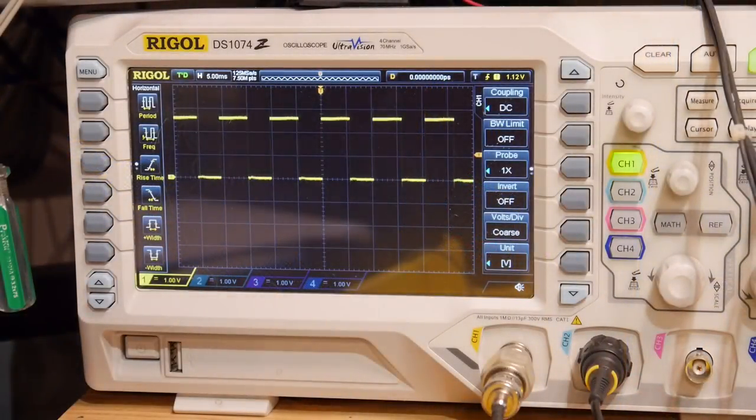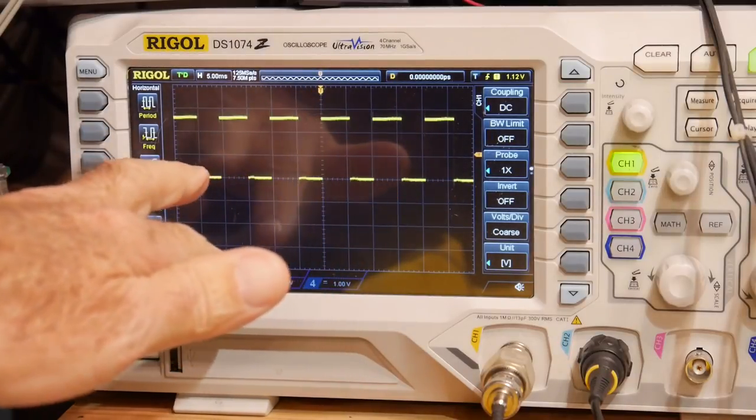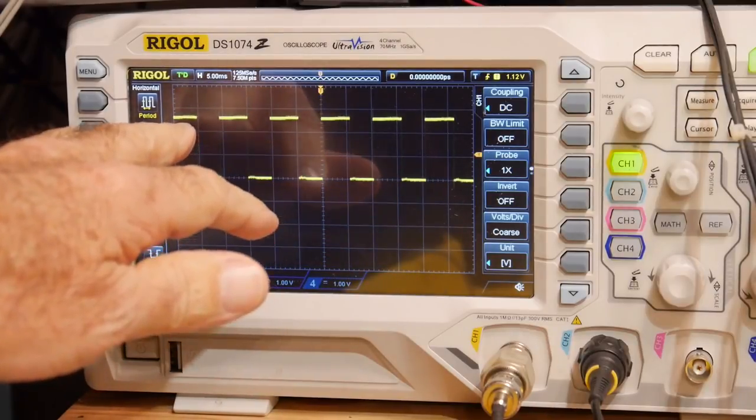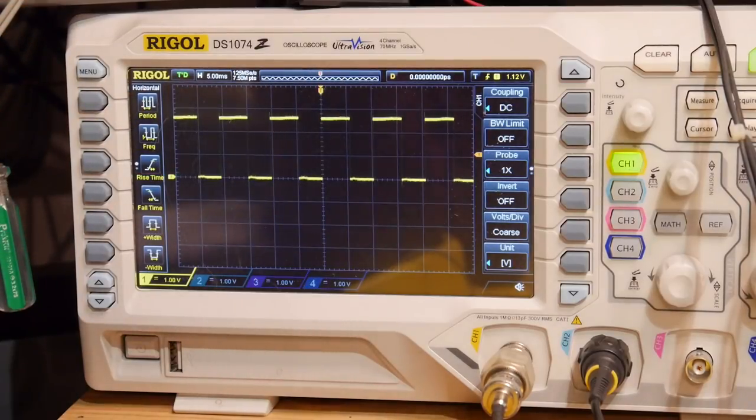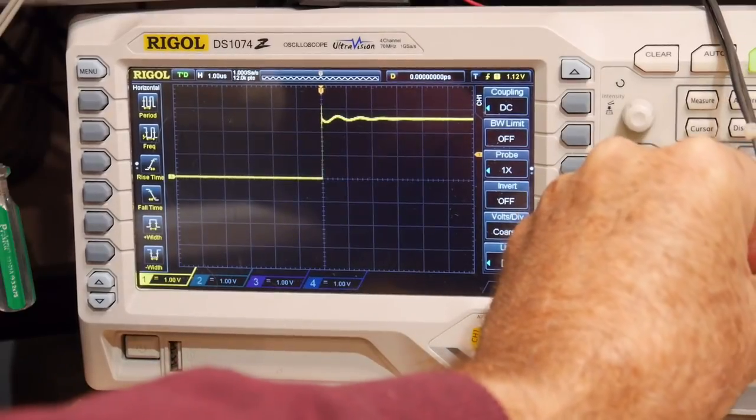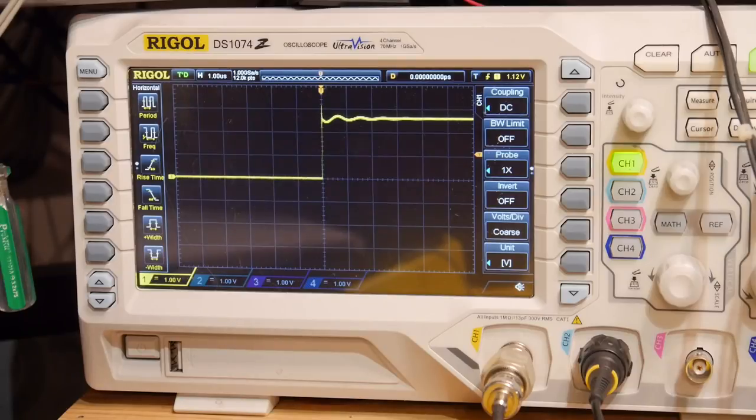Alright, so we have our waveform here. We're at one per division. So, we're getting one, two and a half volts across to the other side. Which is 50 ohms impedance on one side, 50 ohms impedance on the other side. You get half the voltage. So, that makes sense. So, let's zoom and take a look at our rising edge. It looks very fast but there's a wiggle on it. So, that's the first thing I noticed. This is a pretty substantial wiggle.